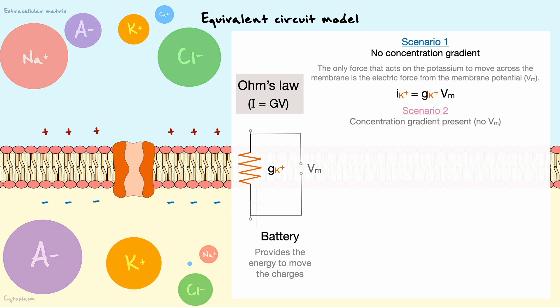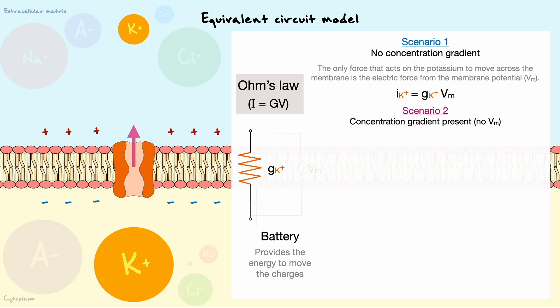Now, imagine a second scenario where we only consider the chemical gradient from potassium. From what we went over in our discussion on the electrochemical gradient, recall that in this scenario, the motion of potassium will be influenced by two forces. First, the chemical gradient that drives the potassium to exit. And secondly, the electrical gradient that forces the positive charge to equilibrate the negative charges it leaves behind. For that reason, the equilibrium potential acts as a battery to supply energy to drive the potassium movement.